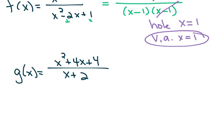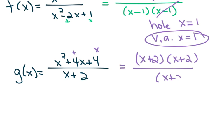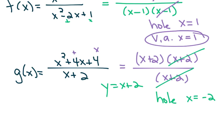Let's look at g of x. Factoring the numerator — the two numbers that multiply to give 4 and add to give 4 are positive 2 and positive 2. There's an x plus 2 in the numerator and an x plus 2 in the denominator — they cancel, resulting in a hole at x equals negative 2. There's nothing left in the denominator, so if you were to graph this, you'd get the equation y equals x plus 2, except at x equals negative 2 the table will say error.